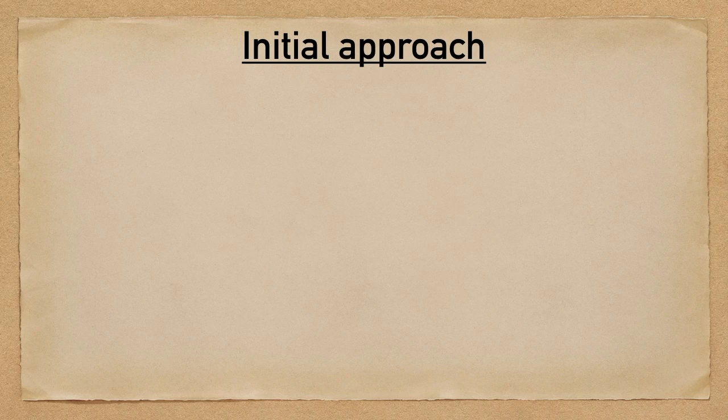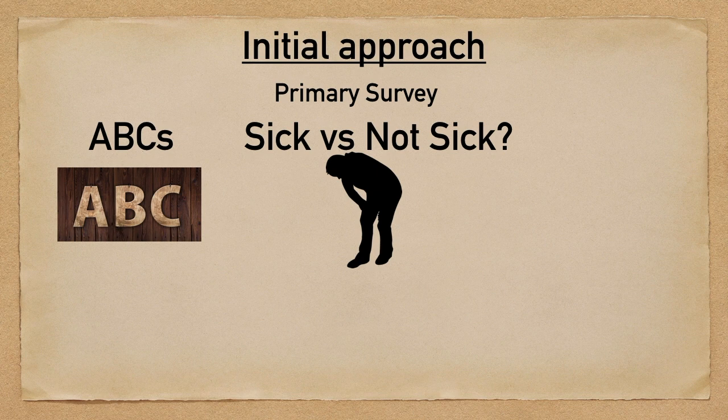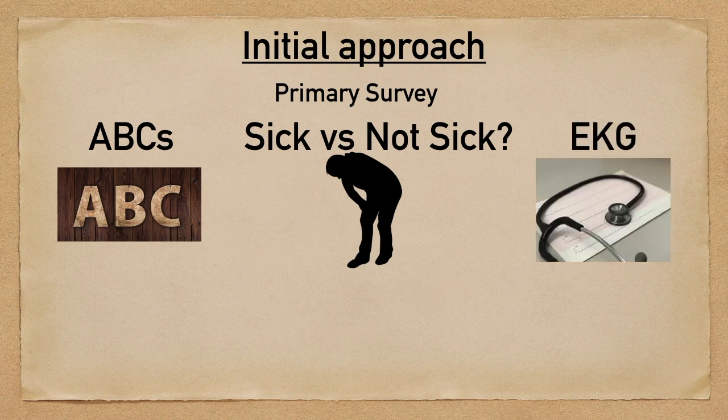The first thing to do with any patient that initially presents to you is a primary survey. This will include assessing the patient's airway, breathing, and circulation. If any of those need to be optimized, you're going to want to address that sooner than later. Take a look at the patient as a whole — do they look sick or not sick? You might also want to obtain an EKG, especially if you're worried about a cardiac cause leading to their upper abdominal pain.